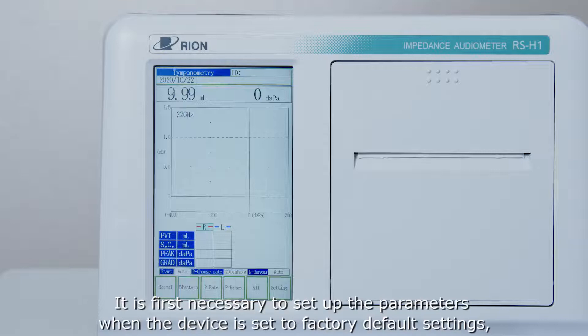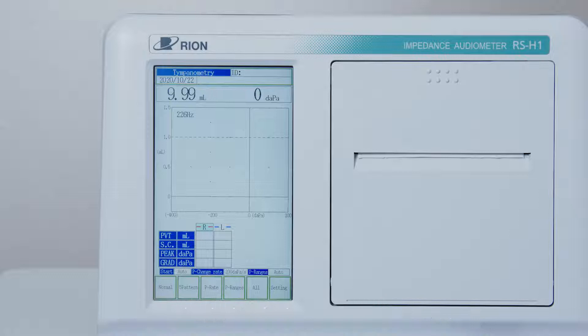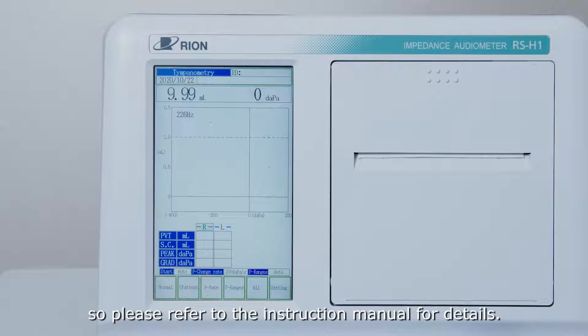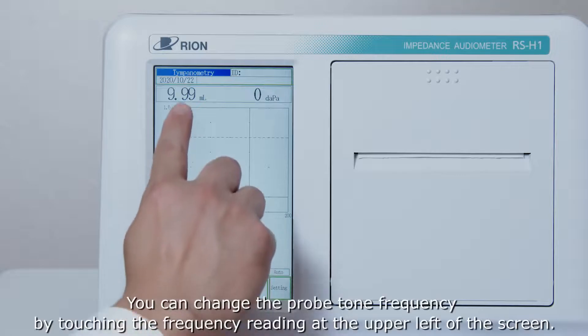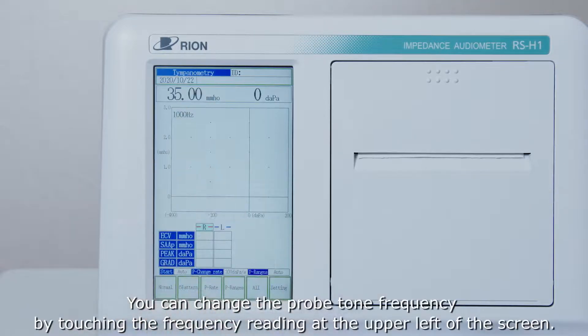It is first necessary to set up the parameters when the device is set to factory default settings, so please refer to the instruction manual for details. You can change the probe tone frequency by touching the frequency reading at the upper left of the screen.